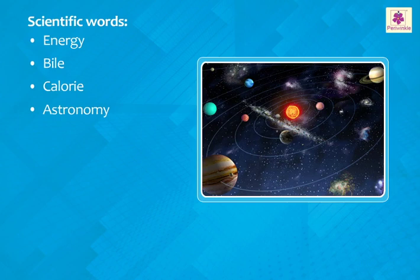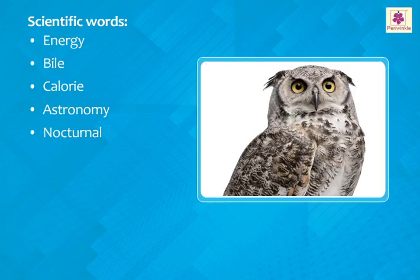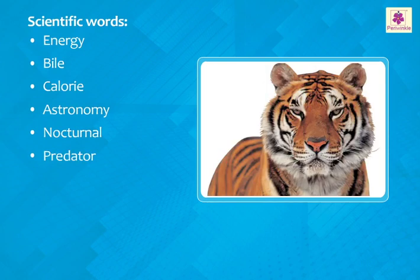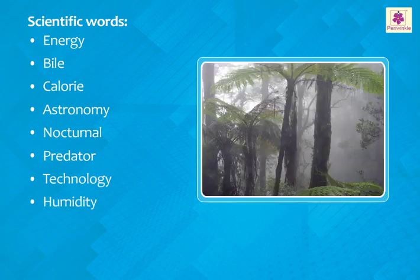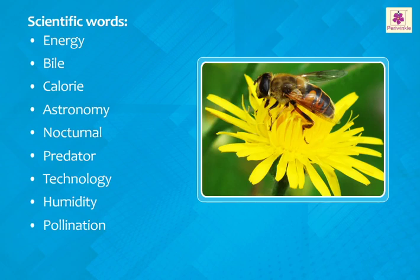The scientific study of objects in space is called astronomy. Animals active at night are called nocturnal. An animal that hunts and kills other animals for food is called a predator. Technology is the development of new things as a result of advances in science. Humidity is the amount of water vapor present in the air.